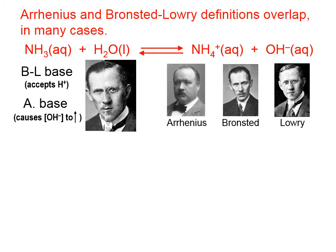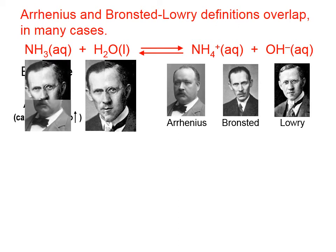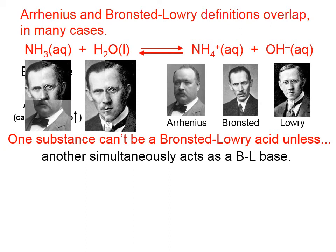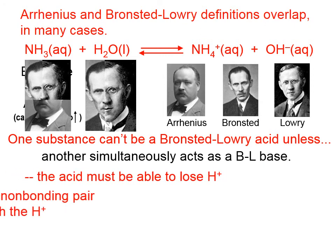One substance can't be a Bronsted-Lowry acid unless another simultaneously acts as a Bronsted-Lowry base. A Bronsted-Lowry acid donates a proton, and something else has to accept it. So Bronsted-Lowry acids and bases always go around in pairs.